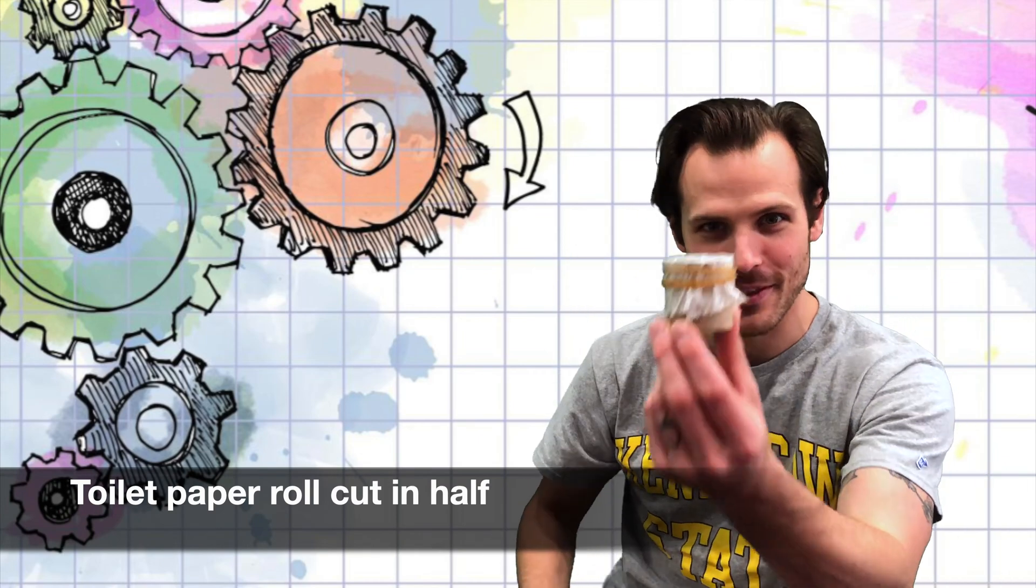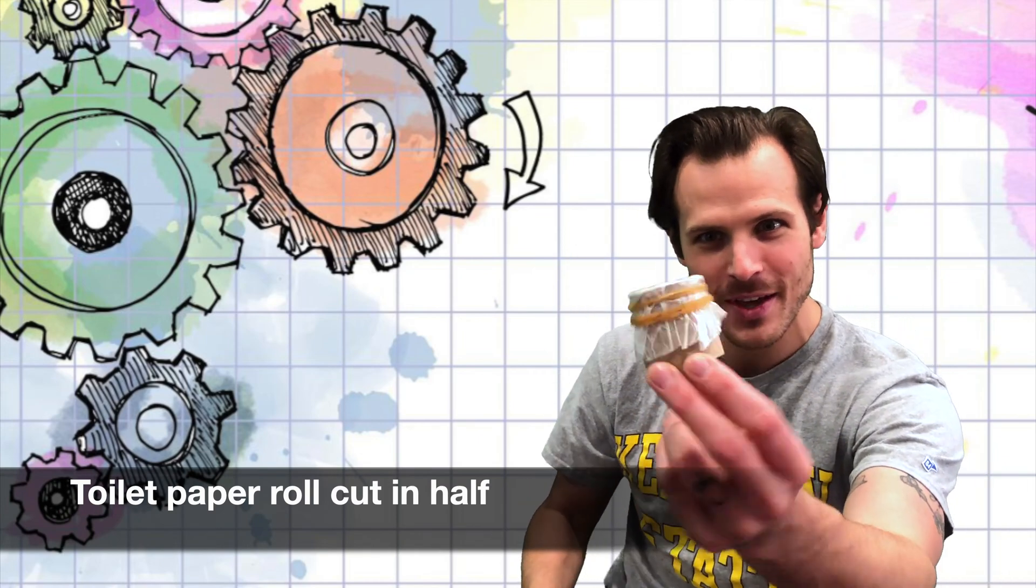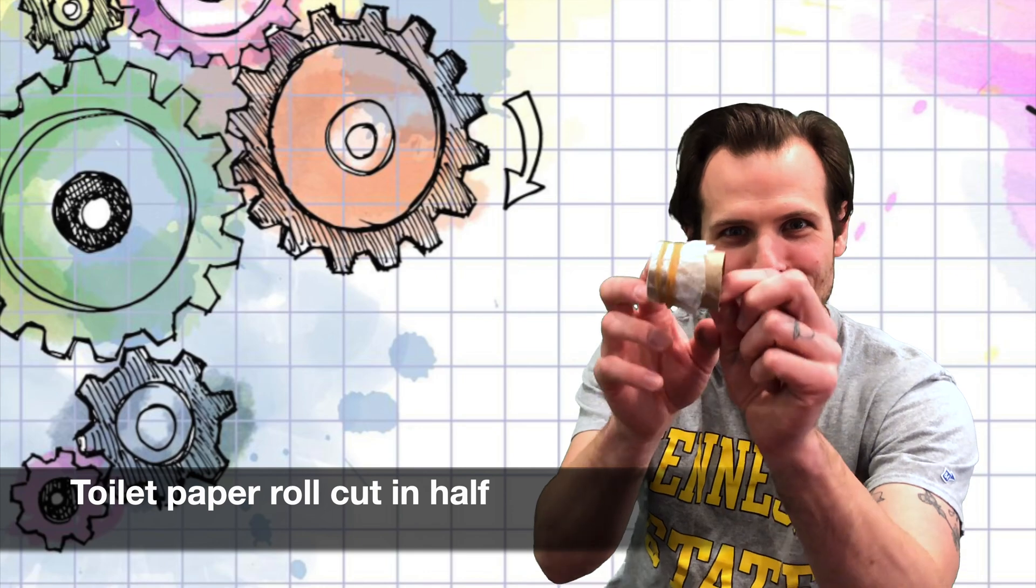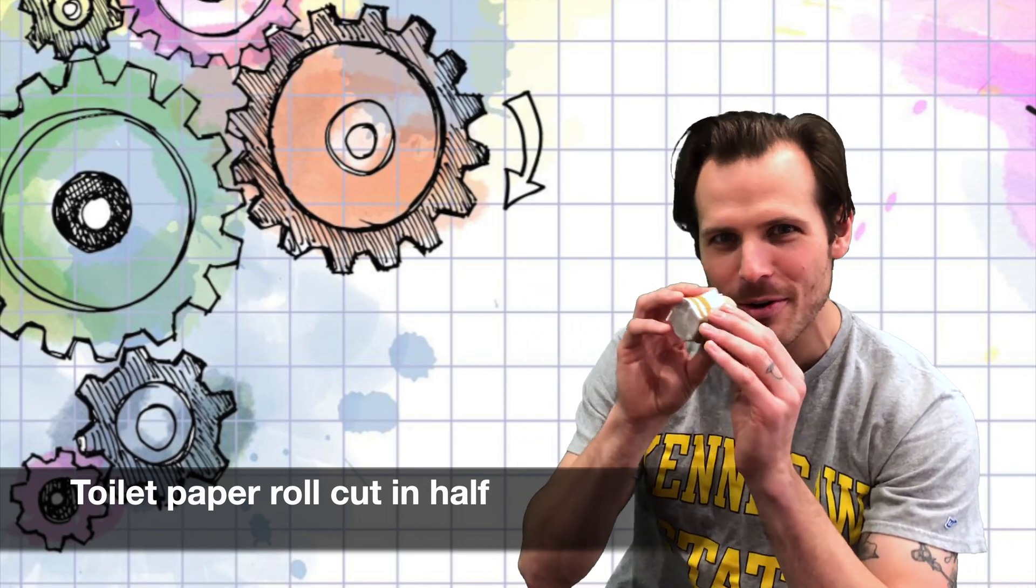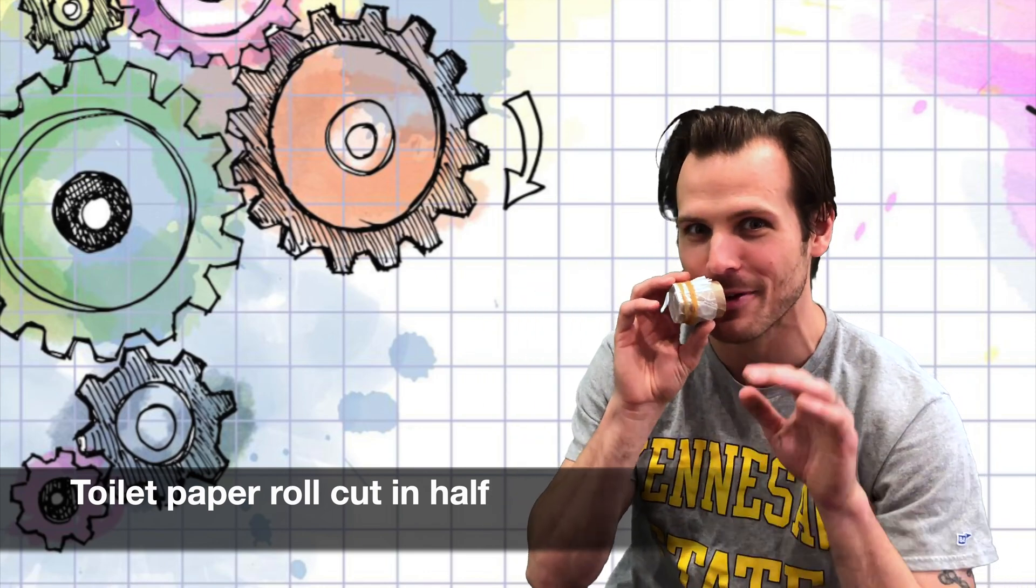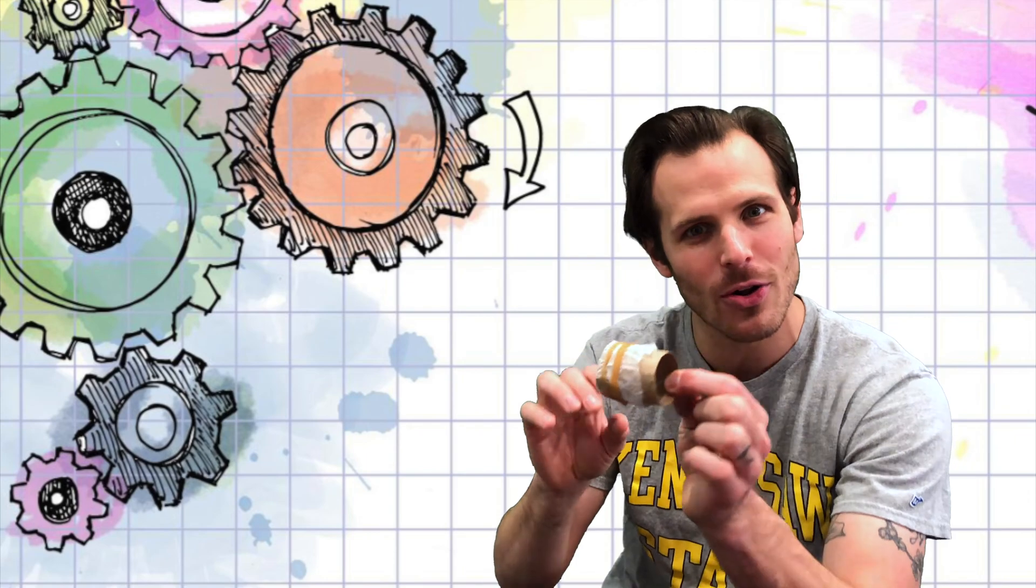Now another one that I've got, I went extreme opposite. This is my piccolo kazoo. It's half the size of a regular toilet paper roll. And when you put your mouth up to it, same concept, you're going to want to put half of your mouth over the toilet paper roll. Because it has a much smaller resonator, it gives it a little bit of a higher sound.